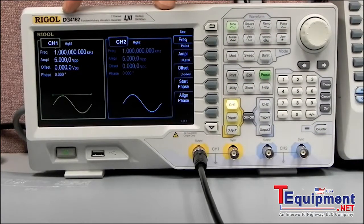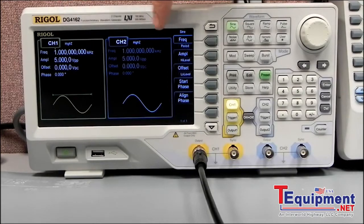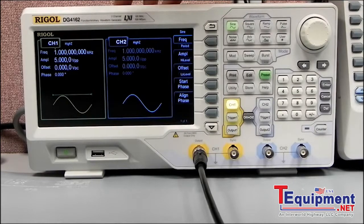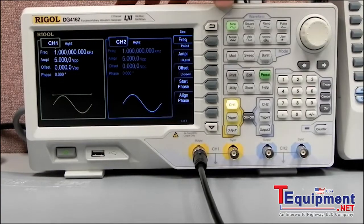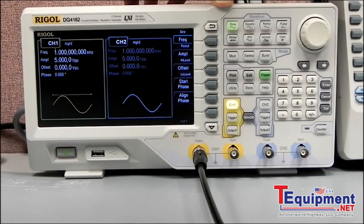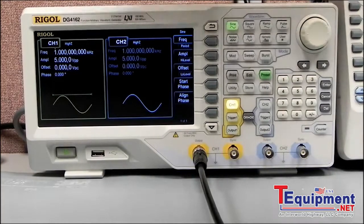You'll see all of the DG4000 models have dual channels. Channel 1 and Channel 2 are identical as far as their power output, voltage and current, as well as all of their capabilities. They each have 16,000 point ARB capabilities, as well as all of the features basically match channel to channel.